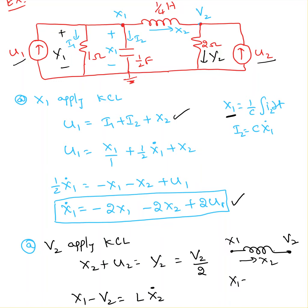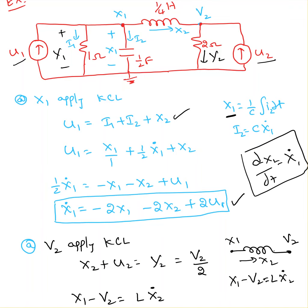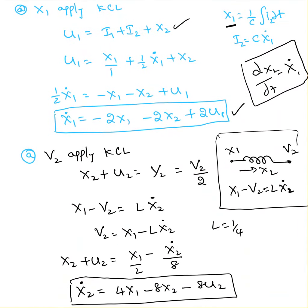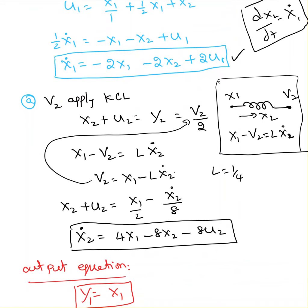For the inductor: x1 minus v2 equals the voltage drop across the inductor, which is L times x2_dot. So v2 equals x1 minus L times x2_dot. Substituting L equal to 1/4 into the KCL equation and solving gives the second state equation: x2_dot equals 4x1 - 8x2 - 8u2.